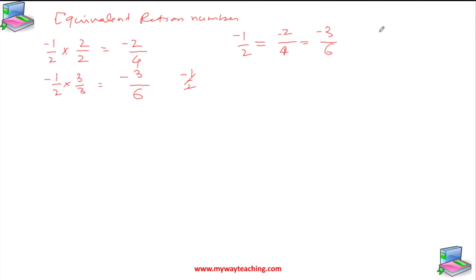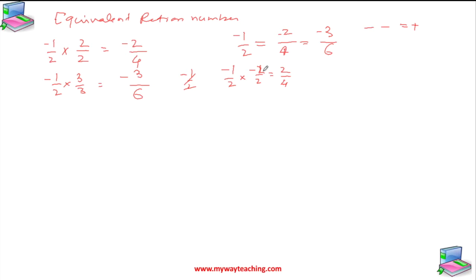Also keep in mind: when you multiply minus by minus, it gives plus. For example, if 1/2 is multiplied by 2/2, it gives 2/4. Minus times minus gives a positive sign.